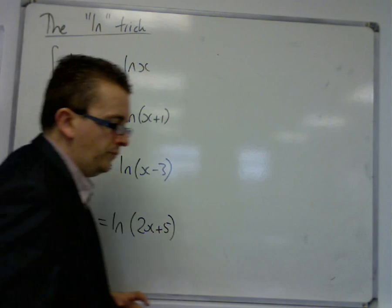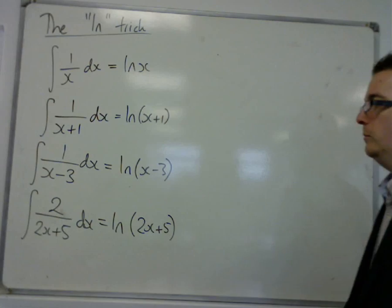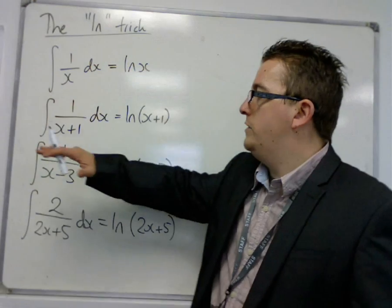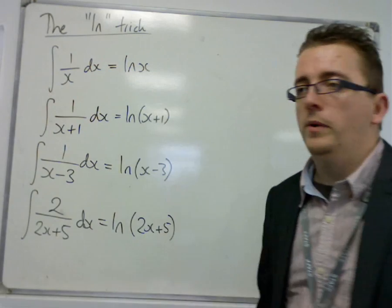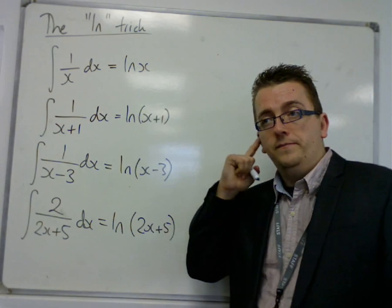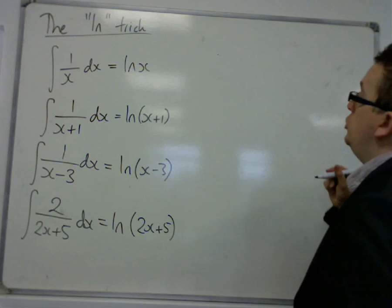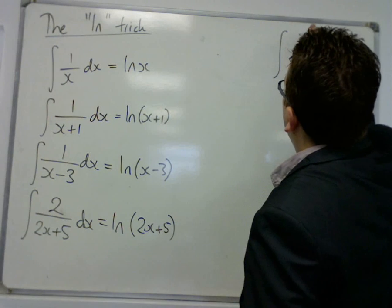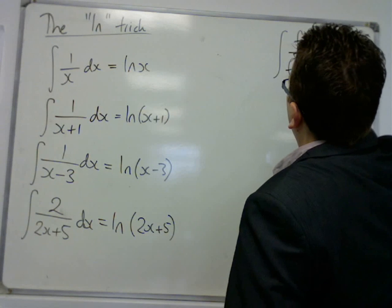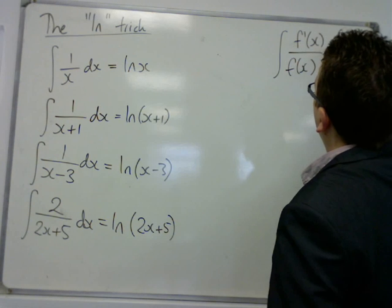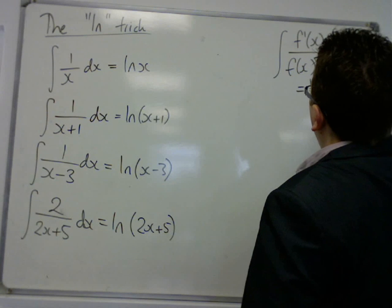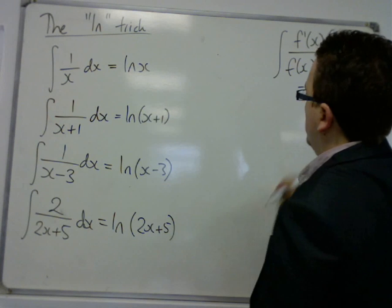So in all of these examples, I'm basing it around this idea that if the derivative of what's on the bottom is on the top, then you can just have the answer as log of the denominator. In general, if you have the integral of f′(x) over f(x) — so the derivative of what's on the bottom is on the top — then this is equal to log of f(x) plus c.